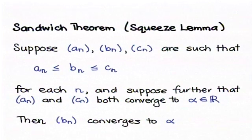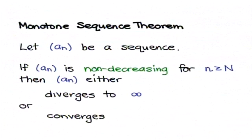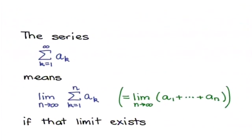You'll need to be familiar with the idea of convergence of sequences. Two of the main results in convergence of sequences are the sandwich theorem (or squeezing lemma) and the monotone sequence theorem. The monotone sequence theorem has two versions, for non-decreasing and non-increasing sequences. So now we want to know what it could possibly mean to sum together infinitely many numbers, and the answer is this: this infinite series really means the limit of the sum of the first n terms as n tends to infinity.